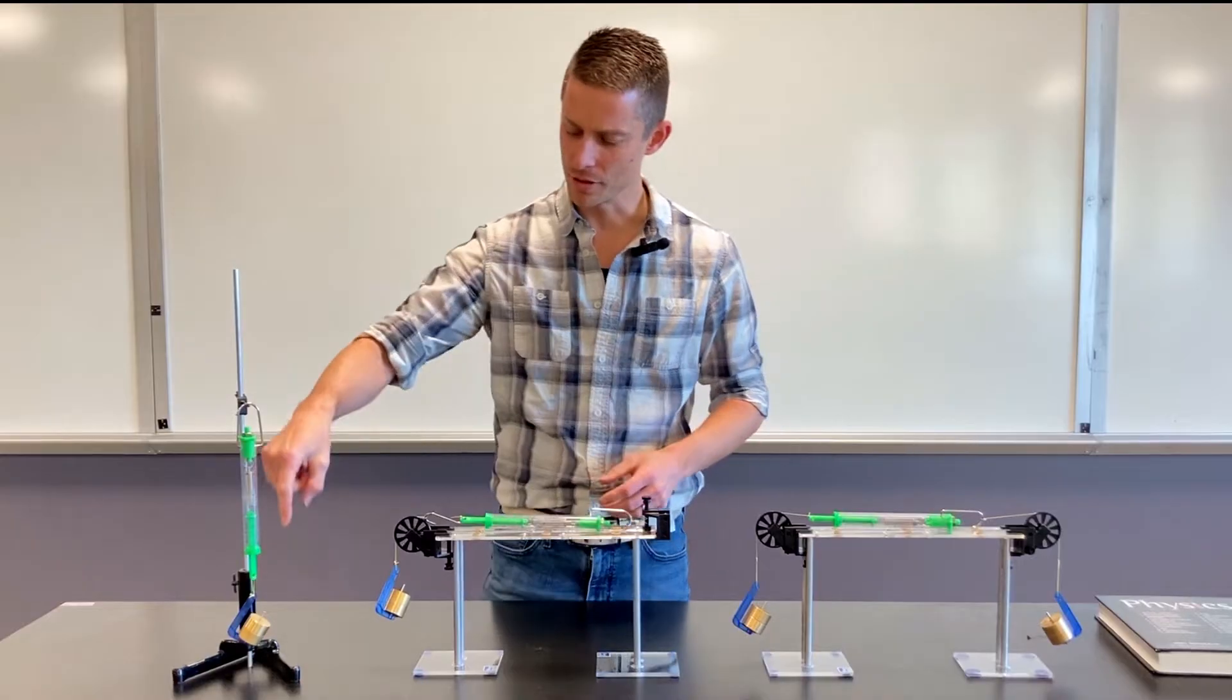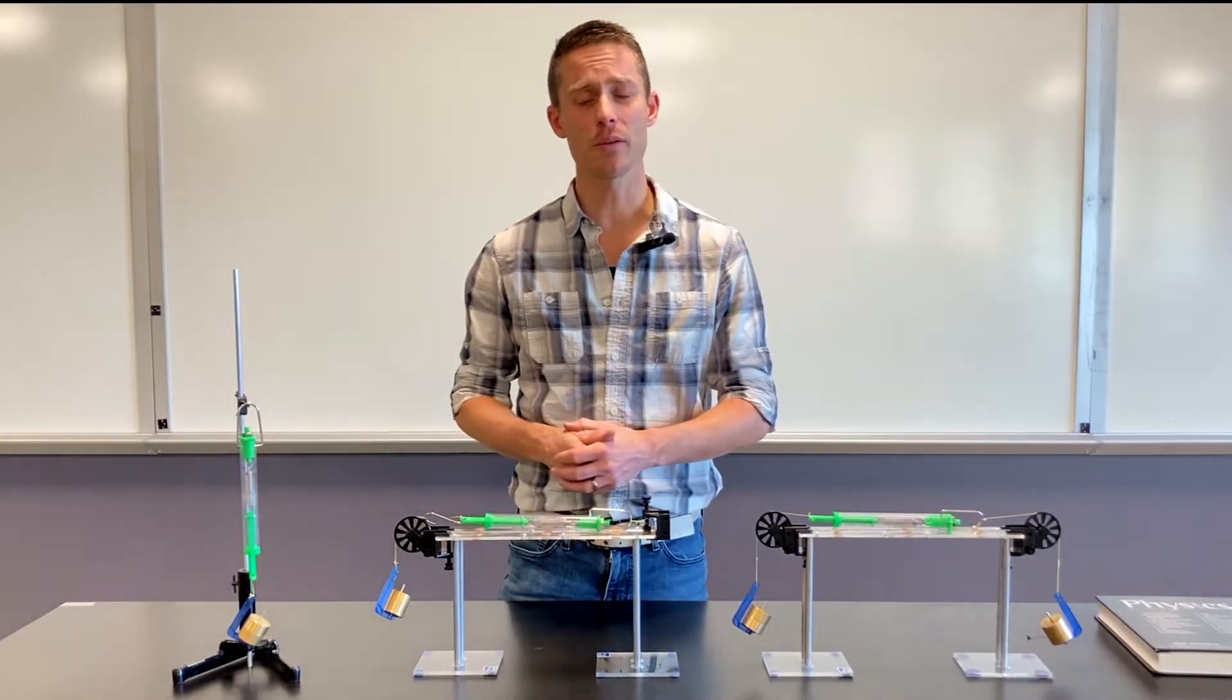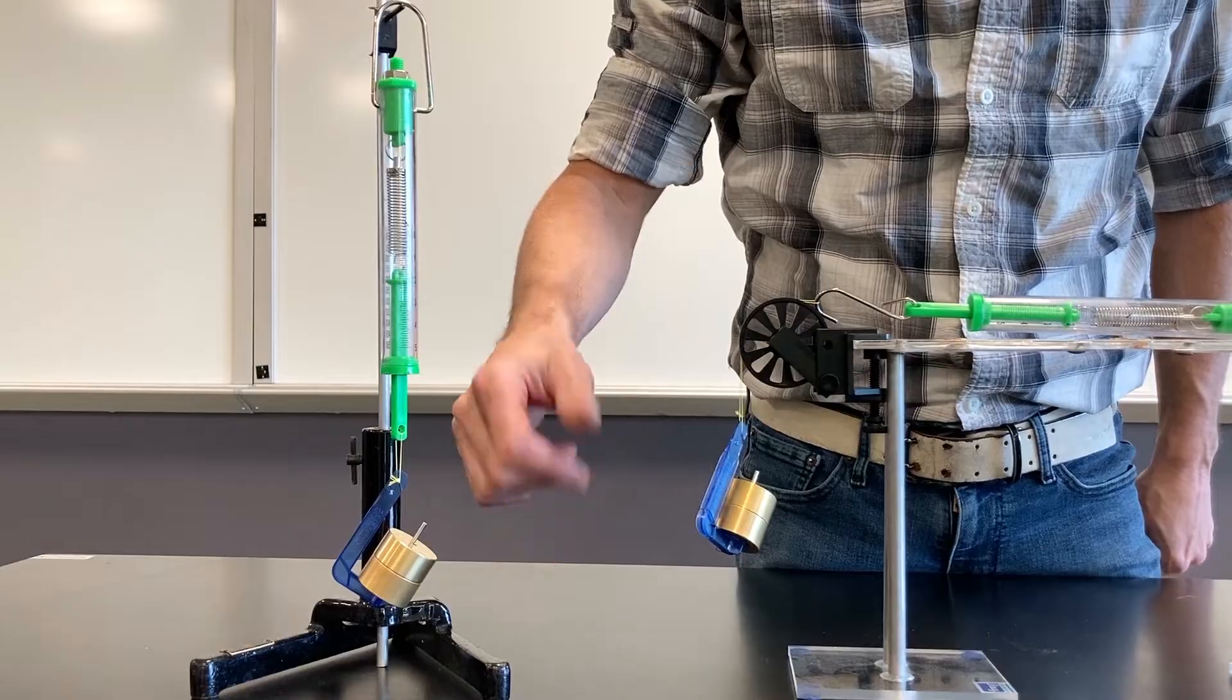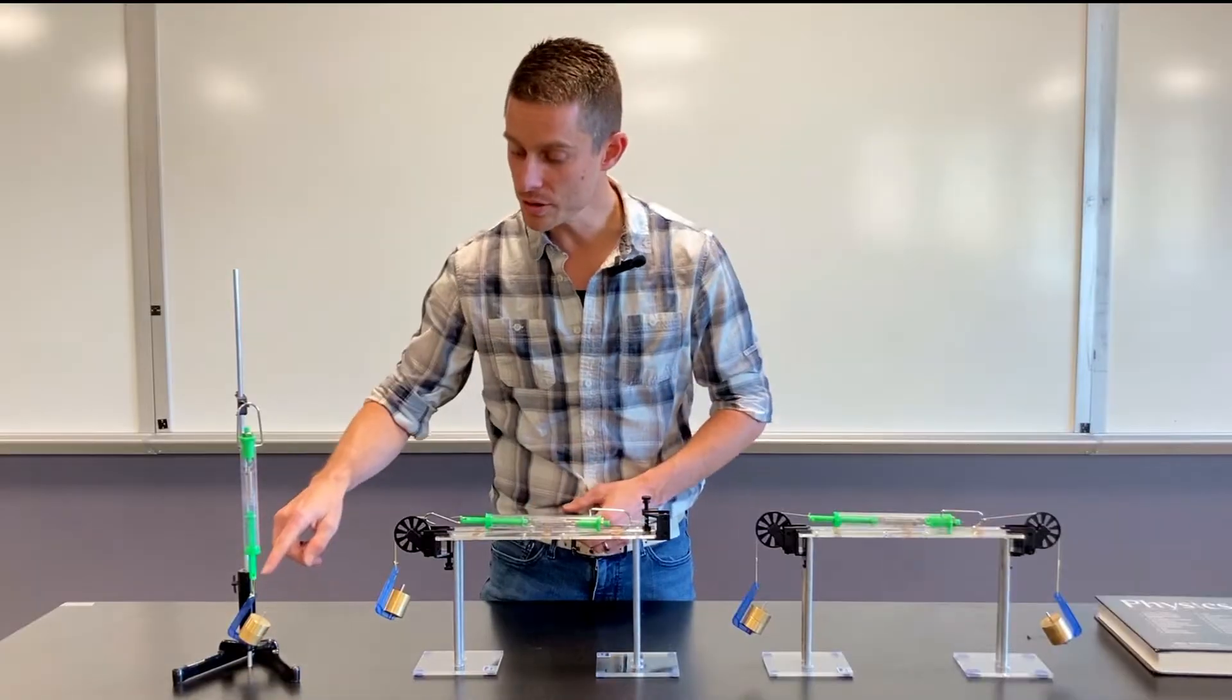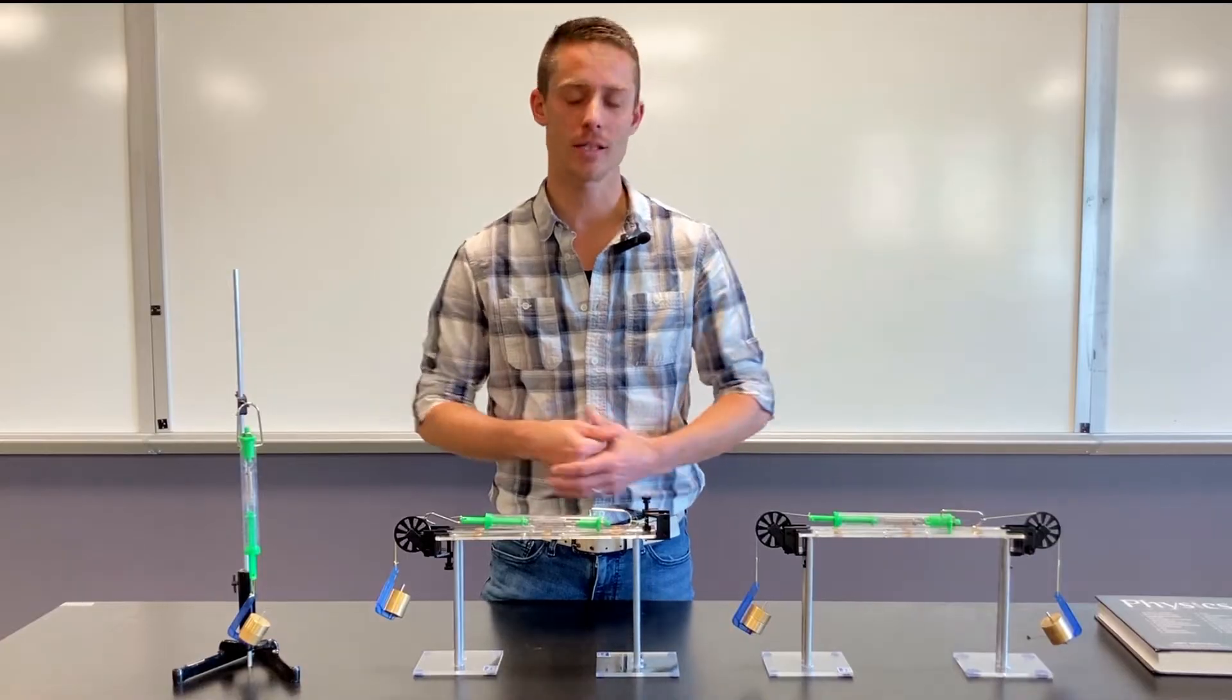In this situation, the net force on this weight right here is zero. That is to say the two newtons downward by gravity are counteracted by the two newtons upward by the spring scale, or really, the string attached to that weight attached to the spring scale.